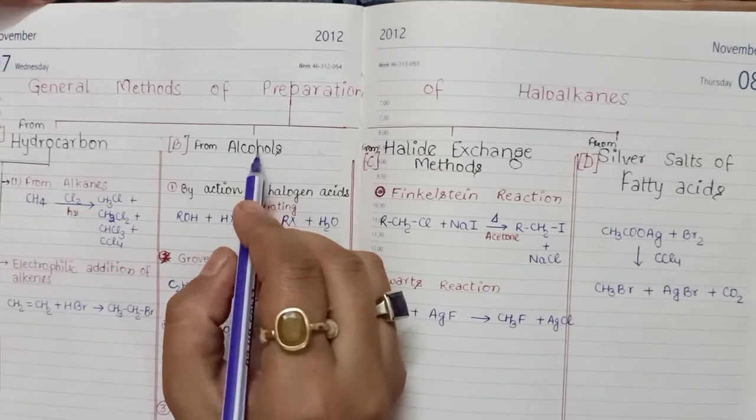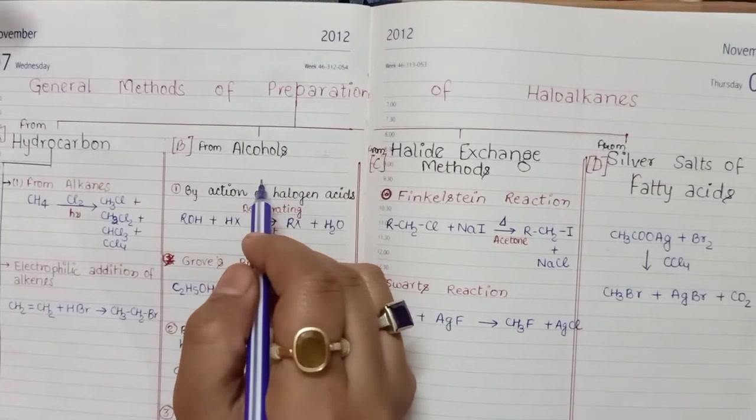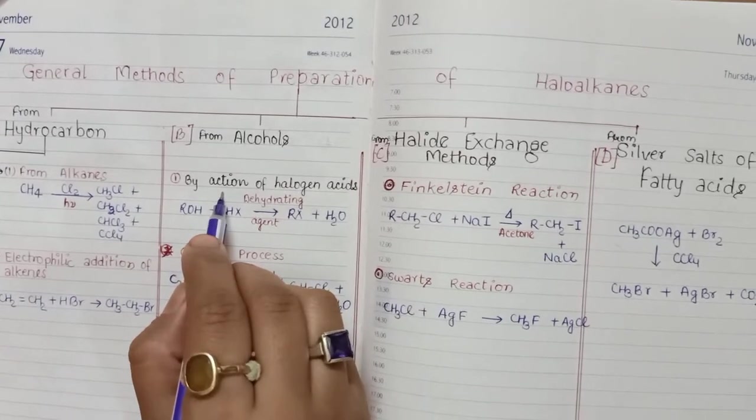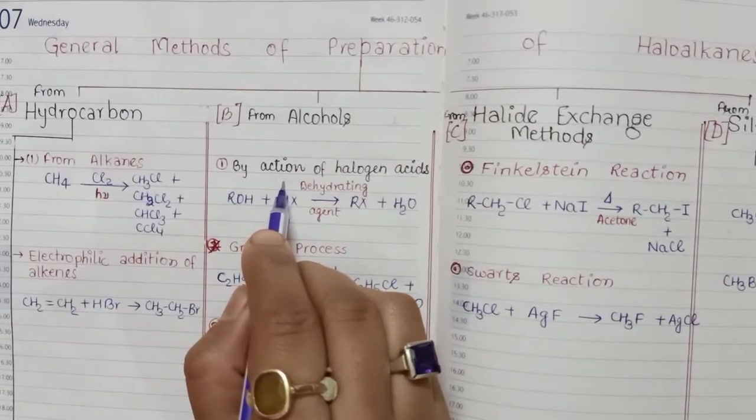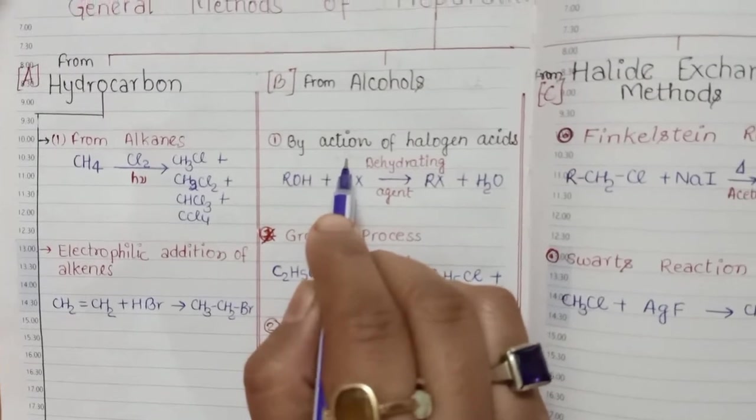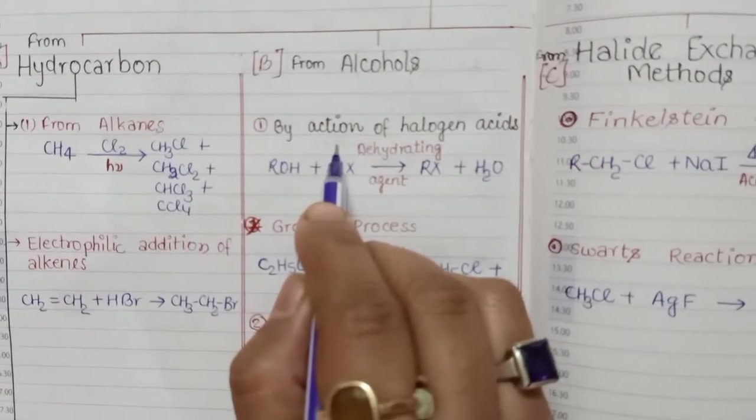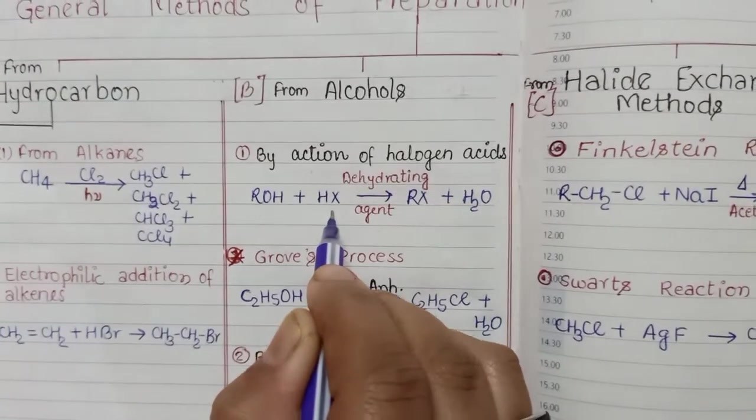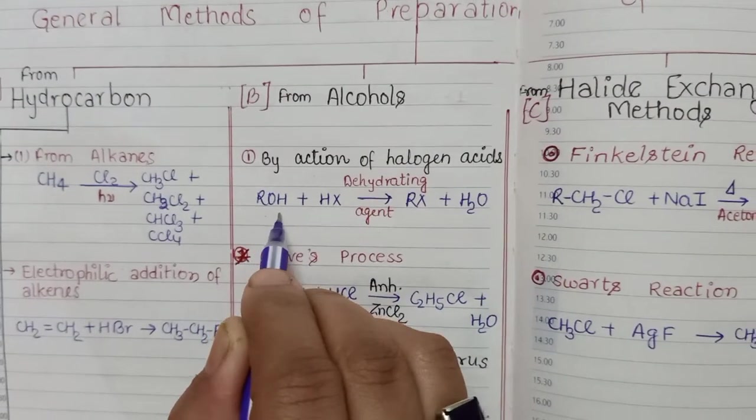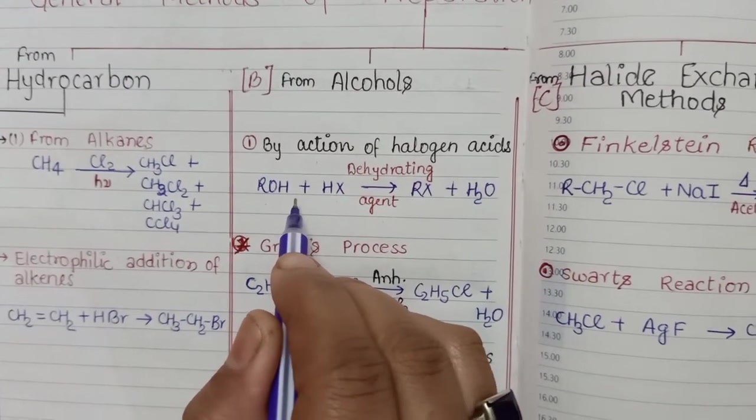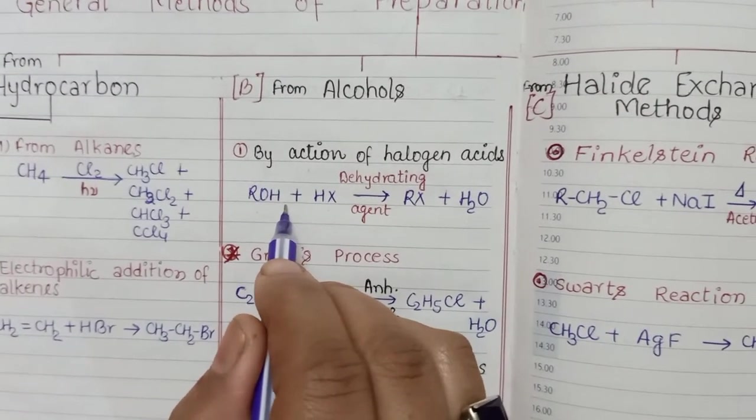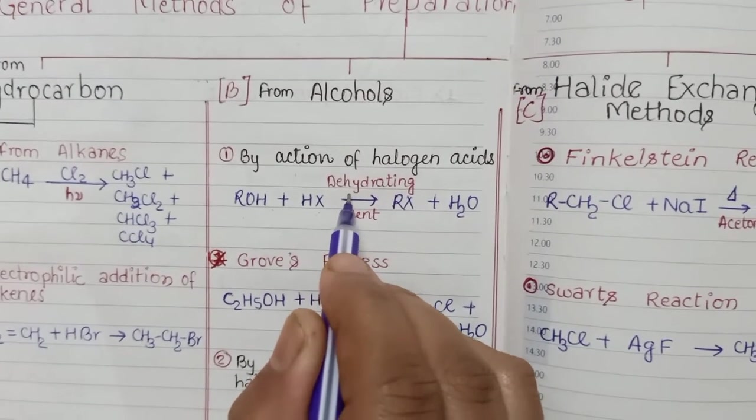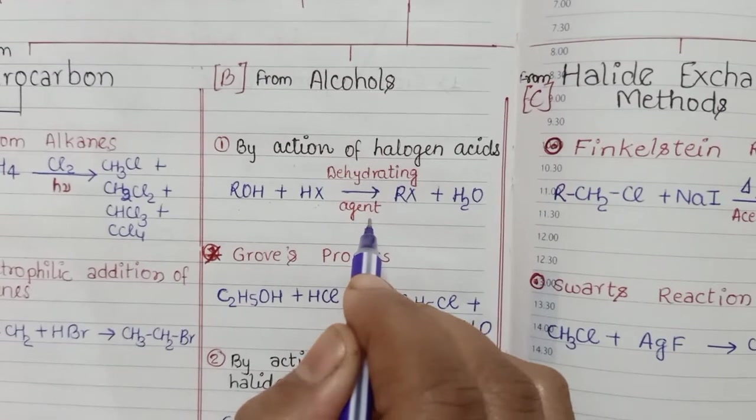The remaining part of the preparation of haloalkanes from alcohols. This is the most convenient and mostly used method for the preparation of haloalkanes. In this method, alcohol reacts with halogen acid. Any alcohol - we can use ethyl alcohol or methyl alcohol - when it reacts with halogen acid, for example HCl or HBr, in the presence of a dehydrating agent, to form haloalkanes.